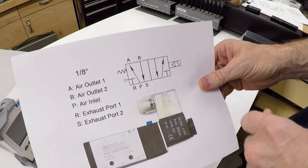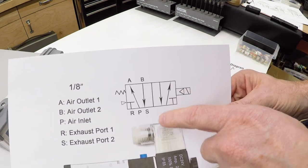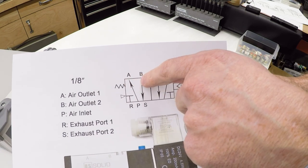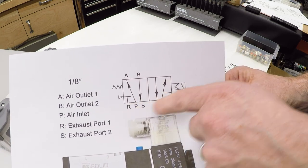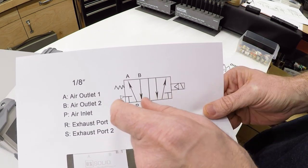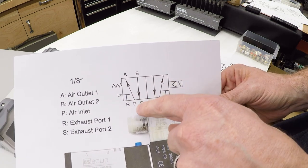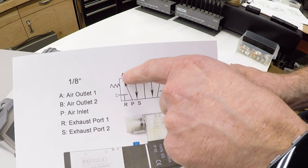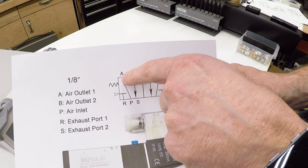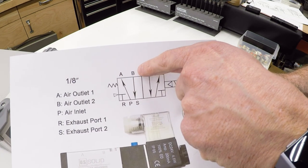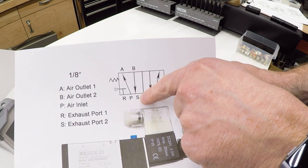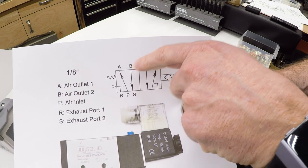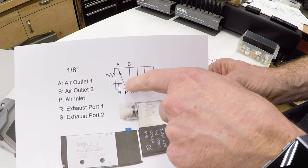The diagram for this valve looks like this. We've got the five ports, the P for the pressure port, A and B for the two sides of the cylinder, and R and S, two exhaust ports. It has two states. Normally, the spring returns it to this state, where the pressure is connected to one end of the cylinder, either extending or retracting it. And the other end of the cylinder is exhausted to atmosphere so that it can move, because the air has to be released from the other side of the cylinder in order for it to be able to move.